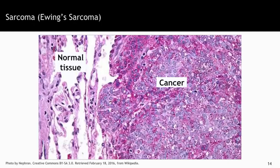This is even clearer in this example of sarcoma — in this particular case, a Ewing sarcoma. On the left, you see normal connective tissue with lots of space between the cells. On the right, you see how the cancer is just uncontrolled growth, a proliferation of cells with big nuclei that don't look normal. There's a huge difference that is very obvious between the left and the right-hand side of the slides.